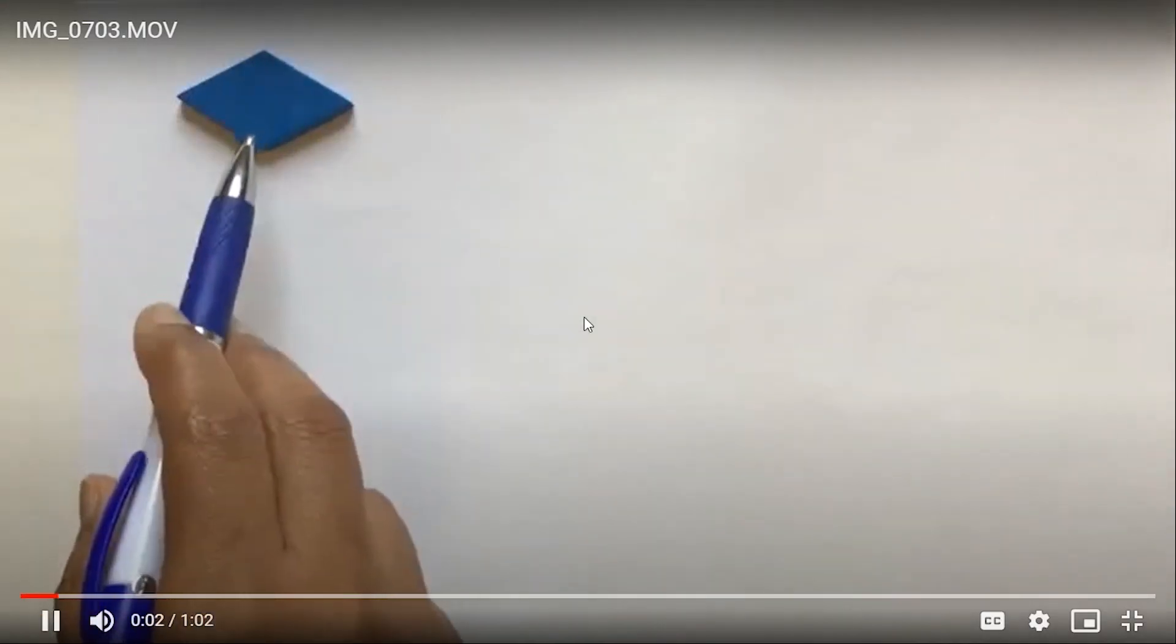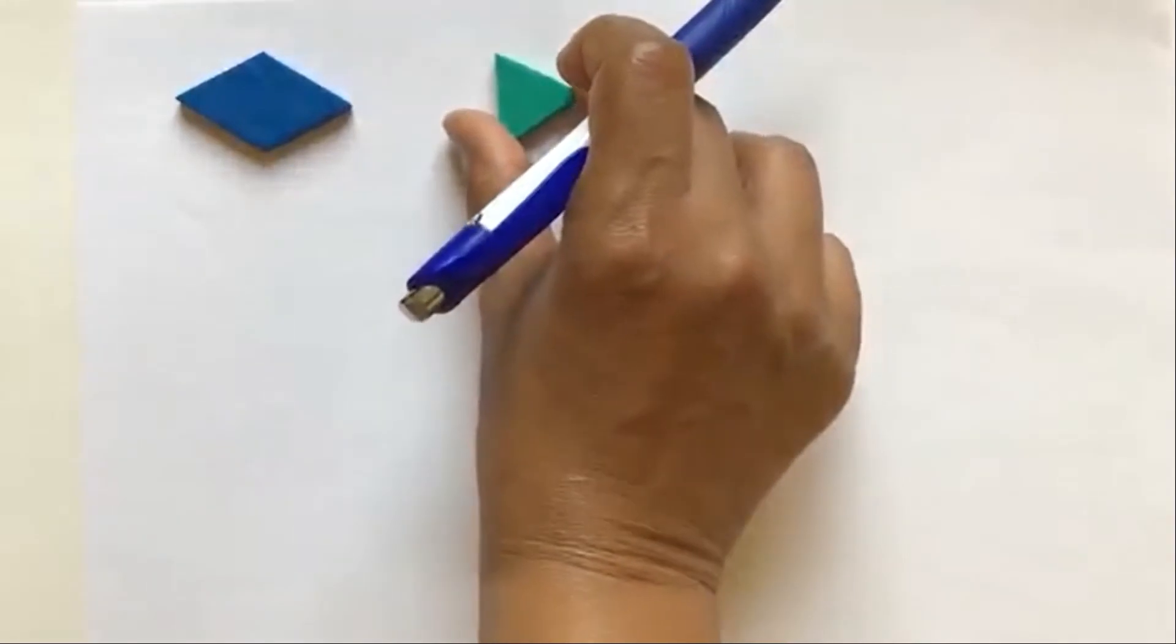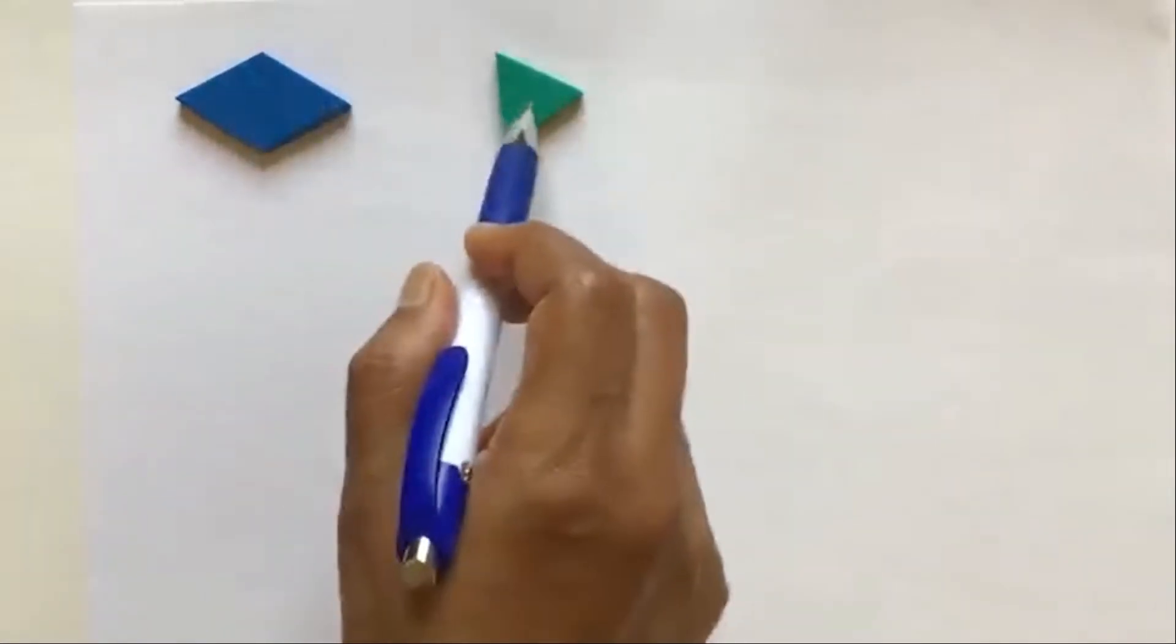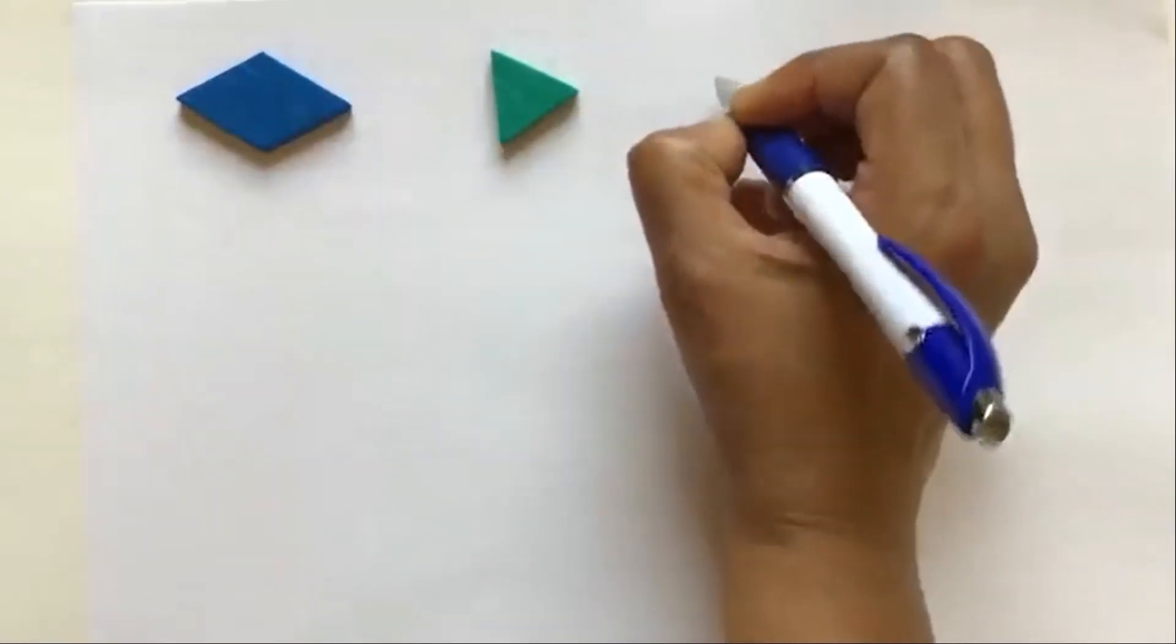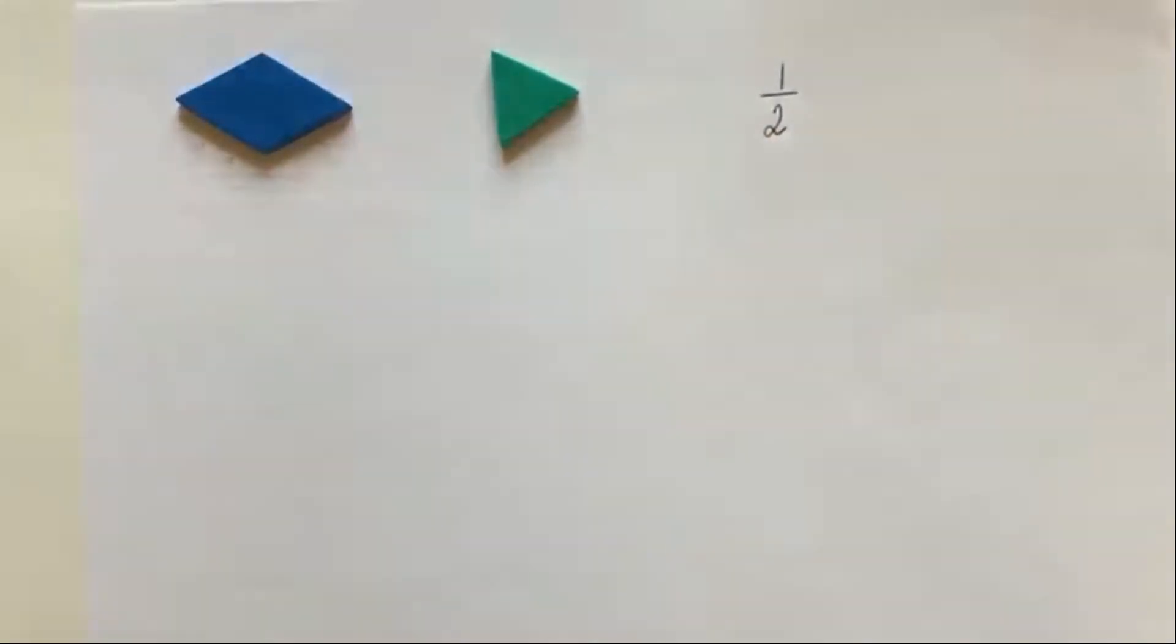Let's look at this rhombus. We would need two of the green triangles to form the rhombus. If I only give one triangle, that is one half of the rhombus.